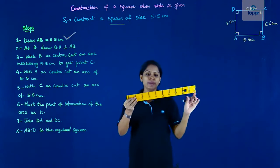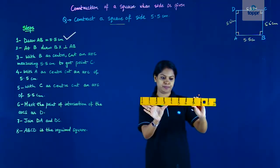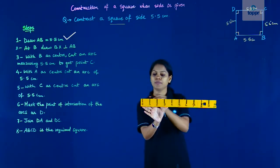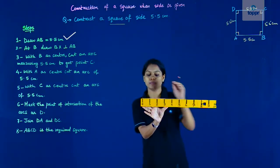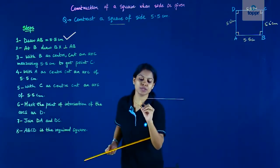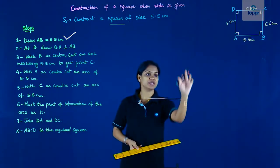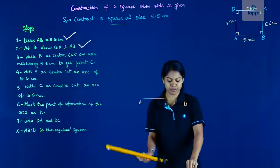So this is AB. Let me name it and then I will first construct 90 degrees at the point B. So we now construct 90 degrees at B.